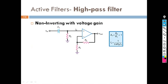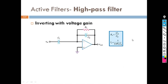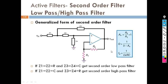Next is the non-inverting with voltage gain high pass filter — same configuration. You have to remember what the voltage gain is for the non-inverting with voltage gain high pass filter. There are also diagrams for the inverting with voltage gain high pass filter.